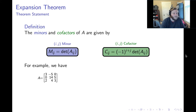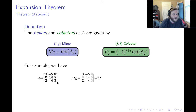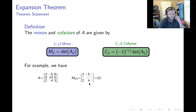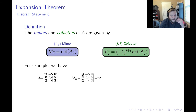Here is a 3 by 3 matrix. If I wanted to calculate its 2,3 minor, I would delete the second row and the third column, and take a determinant of whatever's left over. Here, it would be 12 minus negative 10, which is 22.